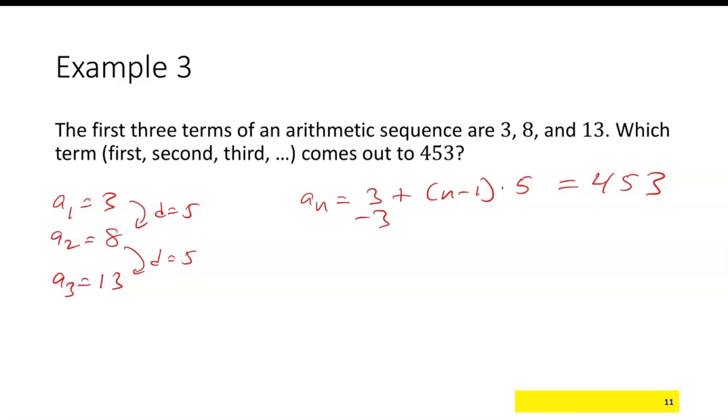I can subtract 3 from both sides. I'll have n minus 1 times 5 is equal to 450. Then divide by 5 on both sides. So n minus 1 is equal to, 450 divided by 5 would be 90. And then n is, you add 1 to both sides, and we end up with n equals 91. So that means this is going to be the 91st term.